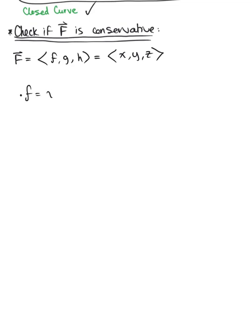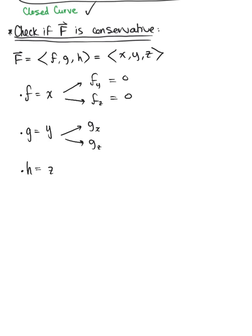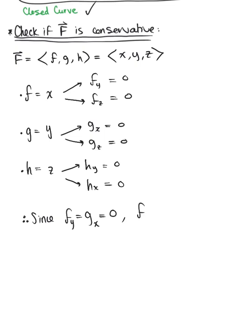We have vector field F with components f = x, g = y, h = z. Let's find all the partial derivatives. The partial of f with respect to y and the partial of f with respect to z are both zero. The partial of g with respect to x and the partial of g with respect to z are also both zero. And the partial of h with respect to y and the partial of h with respect to x are both zero as well. Since all cross-partials are equal — ∂f/∂y = ∂g/∂x, ∂f/∂z = ∂h/∂x, and ∂g/∂z = ∂h/∂y — all equal zero, the vector field F is conservative.